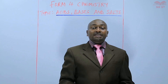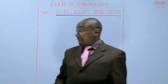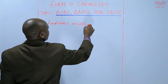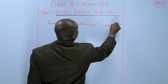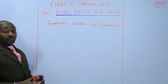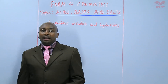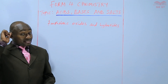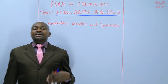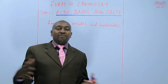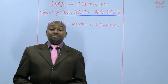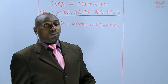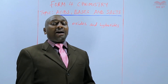Today I would like us to discuss amphoteric oxides and hydroxides. We know that most metal oxides are basic oxides, or they form bases. Most non-metallic oxides are acidic oxides, though a few are neutral. But we have other oxides that have both acidic and basic properties, and we refer to those as being amphoteric.